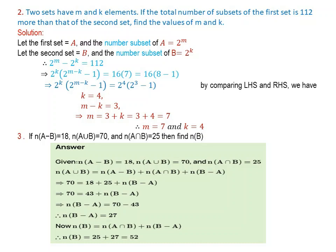Since number of B without A equals number of B minus number of A intersection B, rearranging gives number of B equals number of A intersection B plus number of B without A. Therefore, number of B equals 25 plus 27, which is 52.